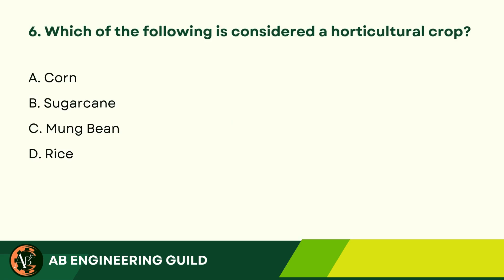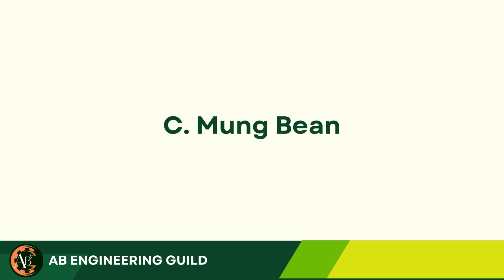Question 6: Which of the following is considered a horticultural crop? A. Corn. B. Sugarcane. C. Mung bean. D. Rice. Answer: C. Mung bean.